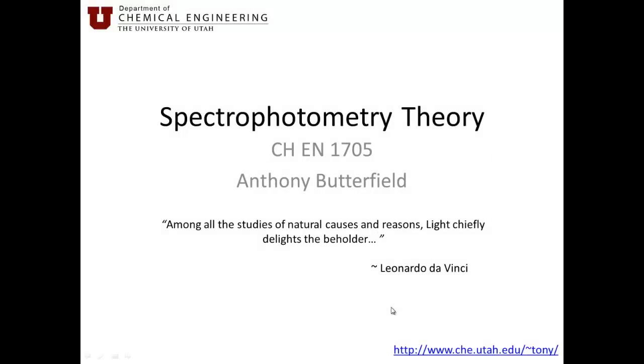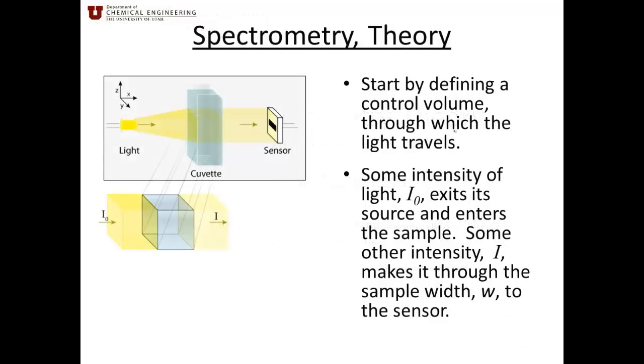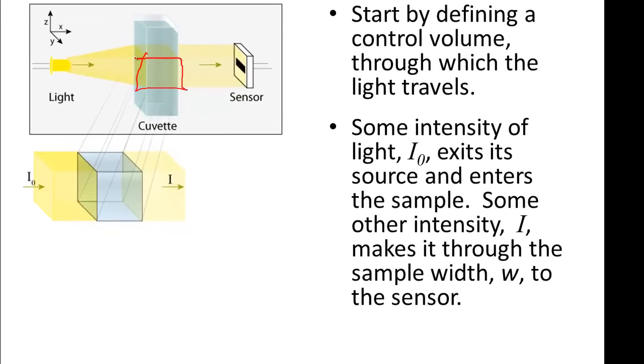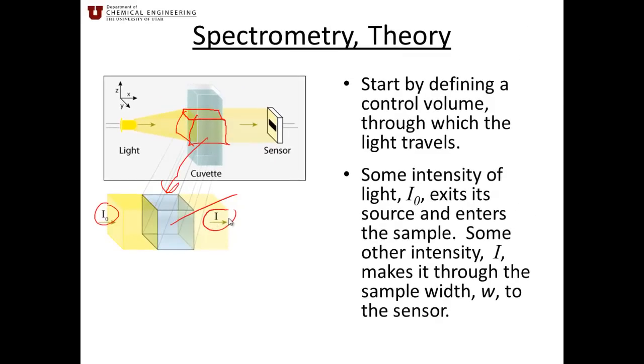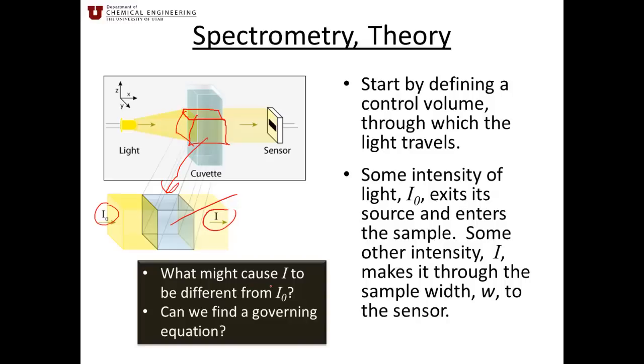A lot of what I talk about and the simulations may be found on my website there. You'll start by defining the control volume. We are going to define the volume as this poorly drawn cube. Basically we've got our cube, into the cube comes intensity I0, out of the cube comes intensity I. We want to measure the intensities and be able to determine what is inside that cube. What might cause I to be different from I0? We want to find a governing equation so that we can quantify what the concentration is inside of that cube.